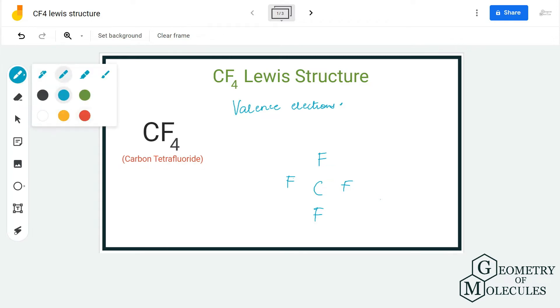To determine its structure, we are first going to look at the total number of valence electrons. Carbon has four valence electrons and each fluorine atom has seven valence electrons, so in total we have 32 valence electrons for CF4.